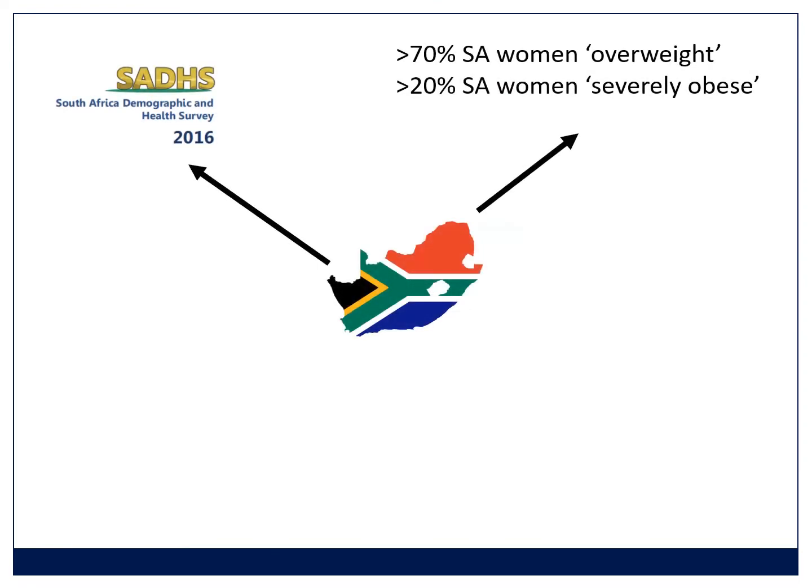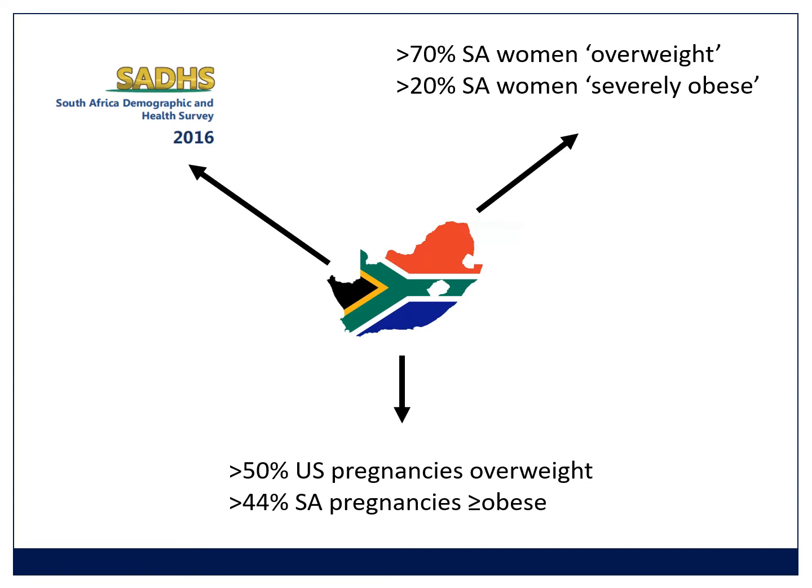It's also important to realize that this is an extremely common problem. The South African demographic and health survey in 2016 showed that over 70% of South African women would be classified as overweight, and more than 20% would be classified as severely obese. In the USA, more than 50% of pregnancies are overweight, and in South Africa, more than 44% are classified at least as obese.